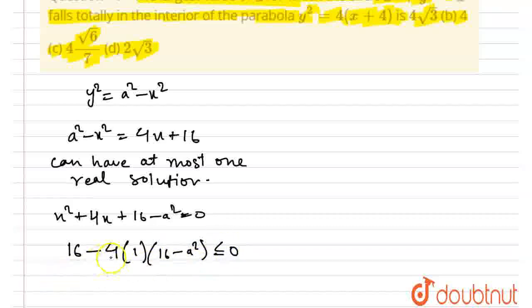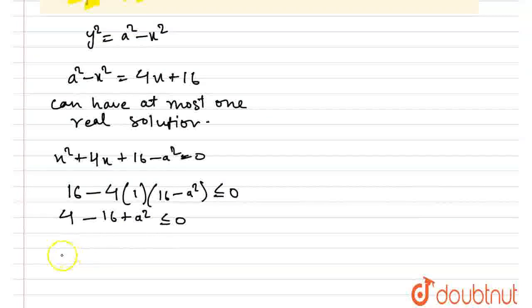Now, this becomes, just taking 4 out from here, this becomes 4 minus 16 plus A square less than or equal to 0. That is, A square is less than or equal to 16 minus 4, that is, 12.